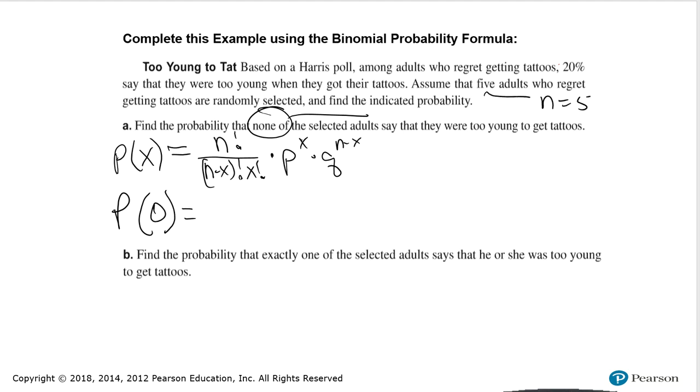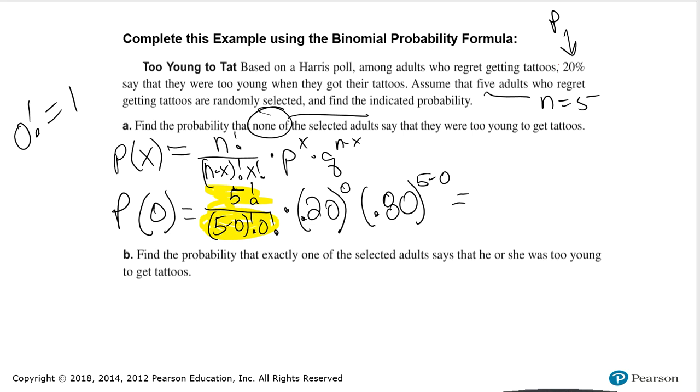I'm looking for none of the selected adults. So P of 0. My n is 5. That's 5 factorial over 5 minus 0 factorial, 0 factorial. And by the way, 0 factorial by definition is equal to 1. And then this is times our little p, which is 0.20. So that's 0.20. And remember that's to the x, which in this case is 0, times little q, which is 0.80, because 1 minus 0.20 is 0.80, to the 5 minus 0.